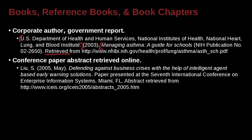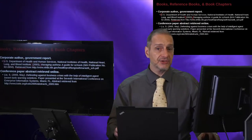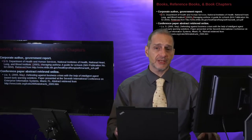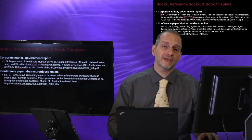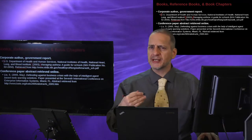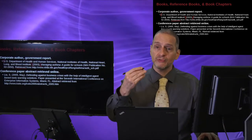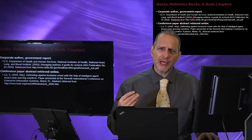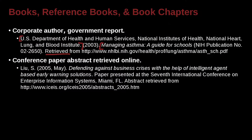Another popular source type is the conference paper or conference abstract. If you're using something like Google Scholar, you can find conference papers and abstracts. You can also go to websites for conferences and find their abstracts. Maybe you find information in an abstract that's useful for your research, but it's not really a full paper. So how would we cite that in our reference list?